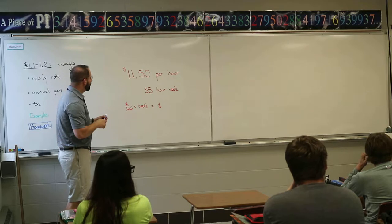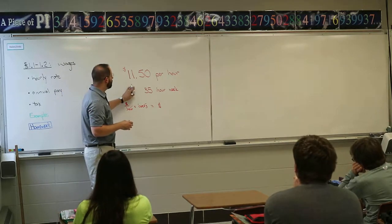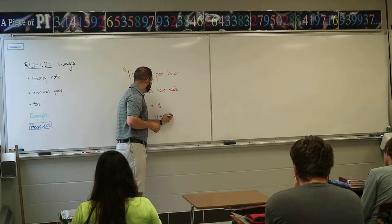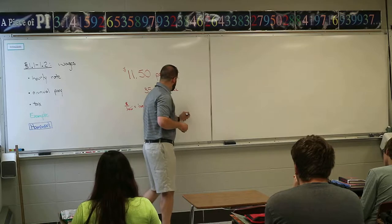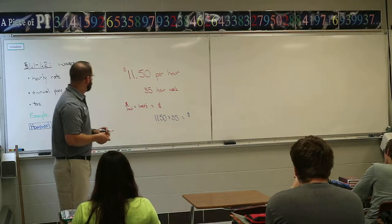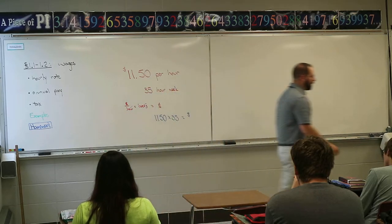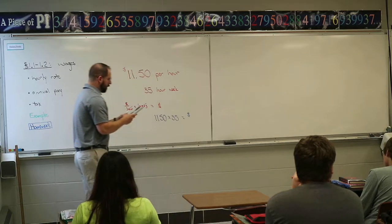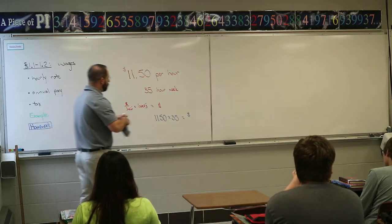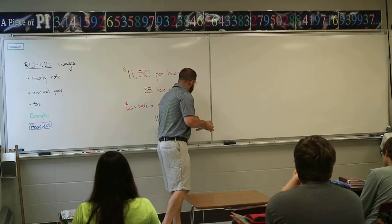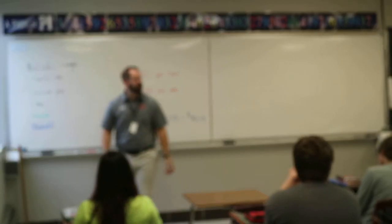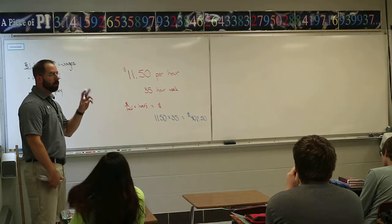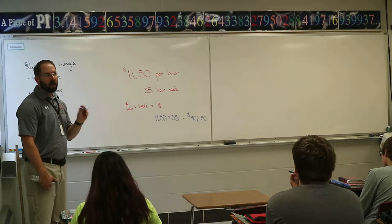Make sure you have a calculator and actually multiply those together. Take $11.50 times 35 — this gives you your pay for that week. Doing the calculation: 11.50 times 35 gives $402.50. That's your gross pay. Now I also want you to find what your actual net pay is going to be after taxes and insurance.